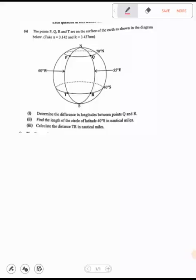It says the points P, Q, R, and T are on the surface of the earth, as shown in the diagram. Take pi to be 3.142, and the radius of the earth has been given to be 3437 nautical miles.